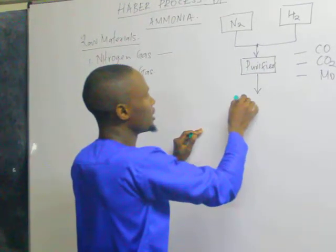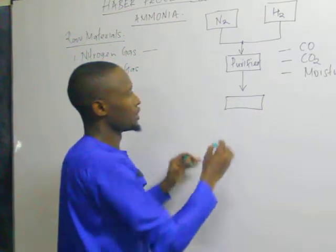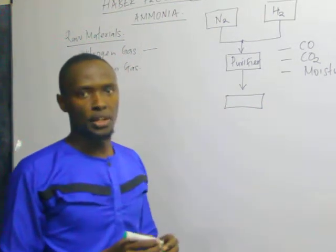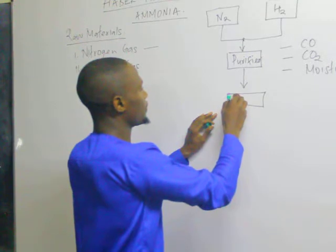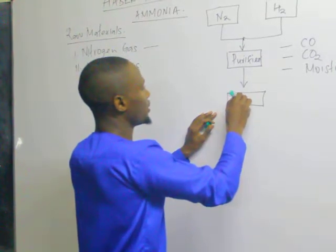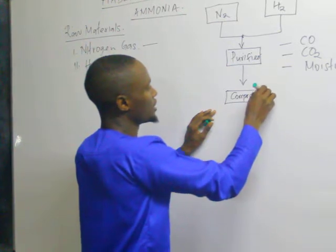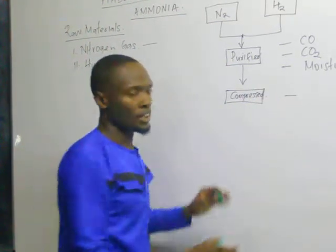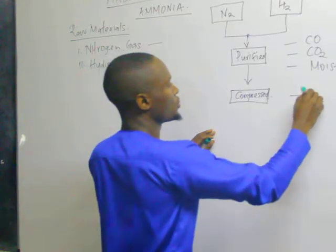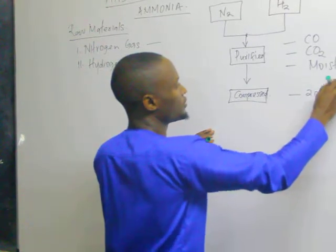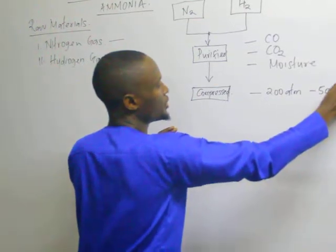After the purifier, the purified gas is taken to another chamber where the two gases are compressed. The condition for compression is 200 to 500 atmospheres.